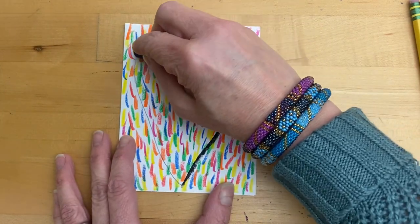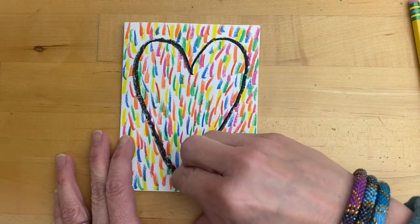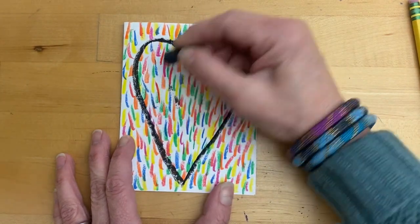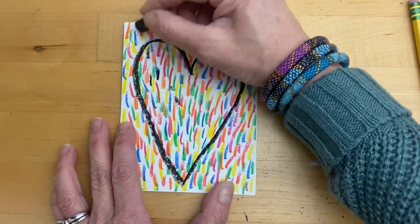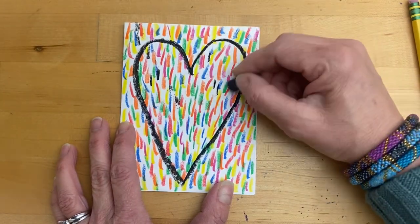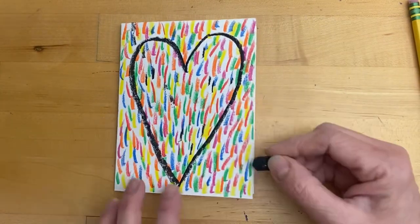And then we are also going to take that black and add just a few flicks of the black in some more white spaces, just to have that go together there.